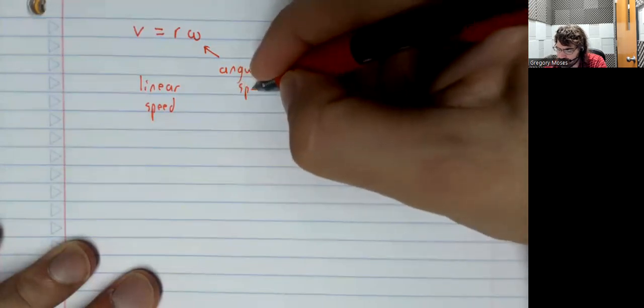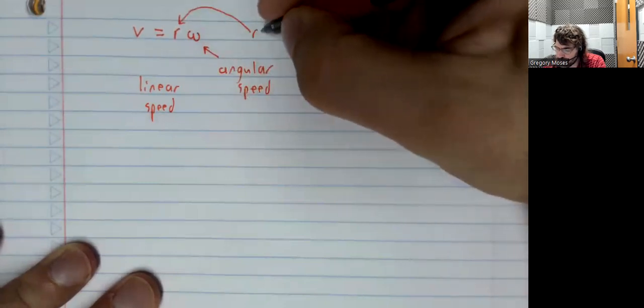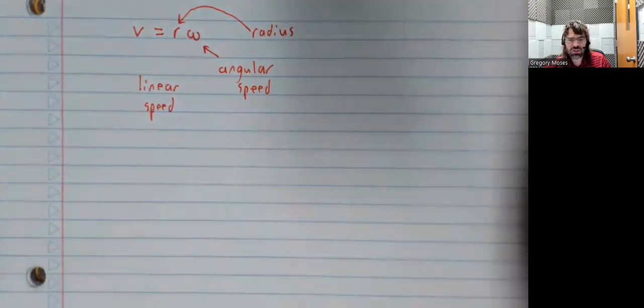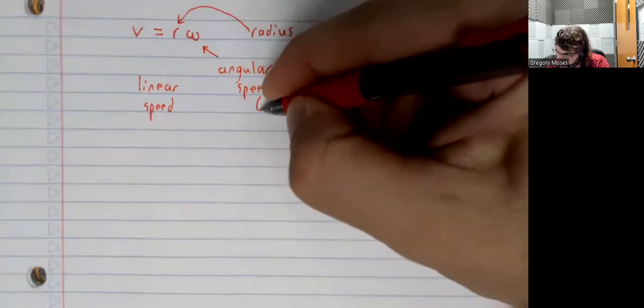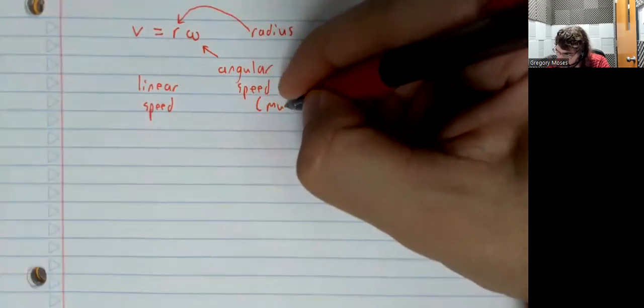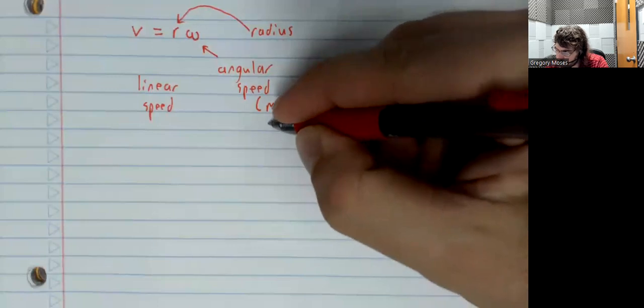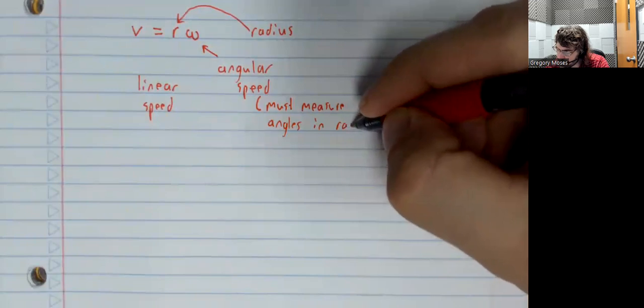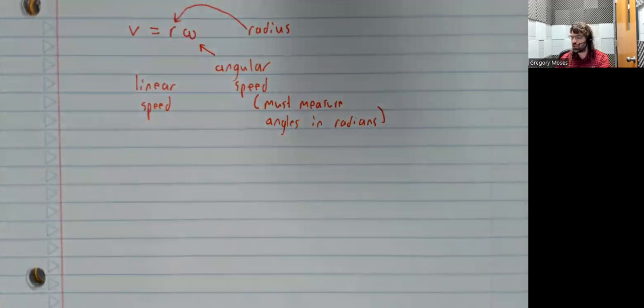And this R is the radius of the circle. Just like when we looked at arc lengths, we need to be in radians here. We must measure angles in radians for this relationship to hold.